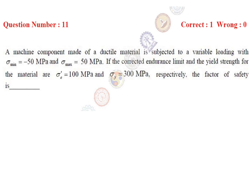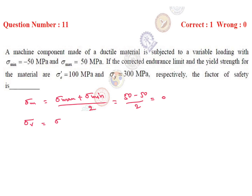We have to calculate the factor of safety. First, sigma mean — mean stress equals sigma max plus sigma minimum divided by 2. Its value is 50 minus 50 divided by 2, so it is 0. Variable stress sigma V equals sigma max minus sigma mean divided by 2, so 100 by 2, which is 50 MPa.